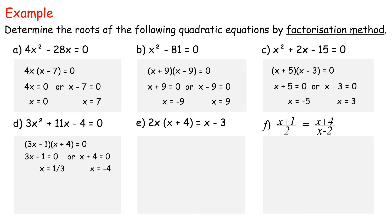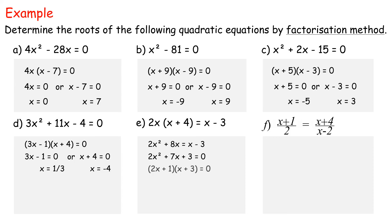In example e: 2x(x plus 4) equals x minus 3. In this example, we convert the equation into the form ax² plus bx plus c equals 0, then solve for x. 2x² plus 8x equals x minus 3. 2x² plus 7x plus 3 equals 0. Thus, (2x plus 1)(x plus 3) equals 0. 2x plus 1 equals 0 or x plus 3 equals 0. x equals negative one-half or x equals 3. Therefore, the roots are negative one-half and 3.